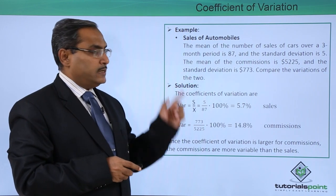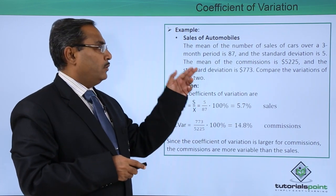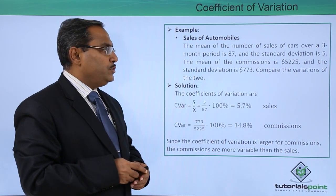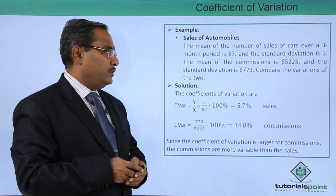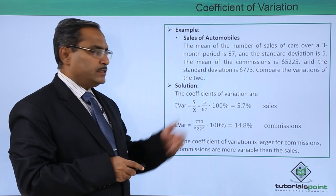But on the other hand, the mean of the commission is $5,225 and the standard deviation is $773. So, compare the variations of the two.